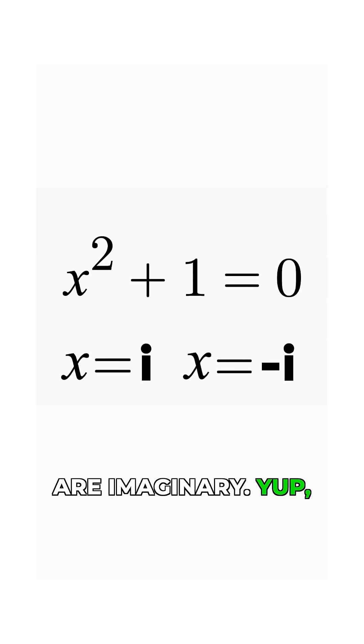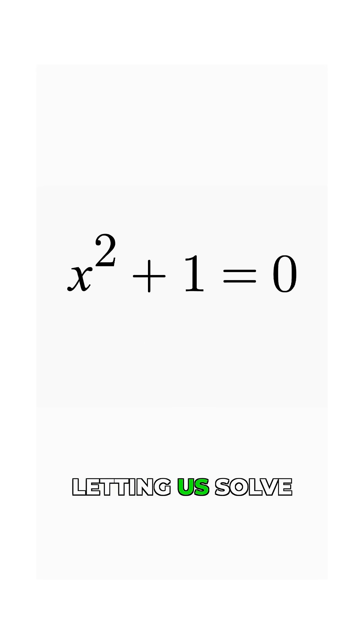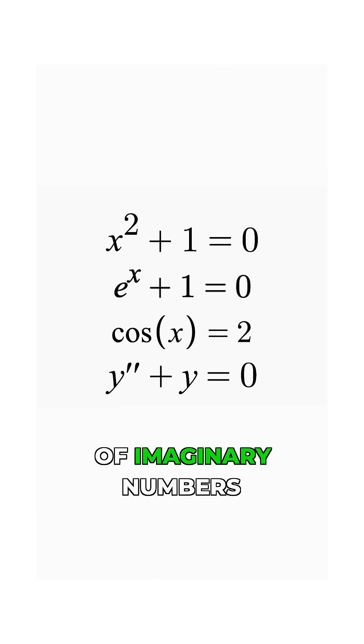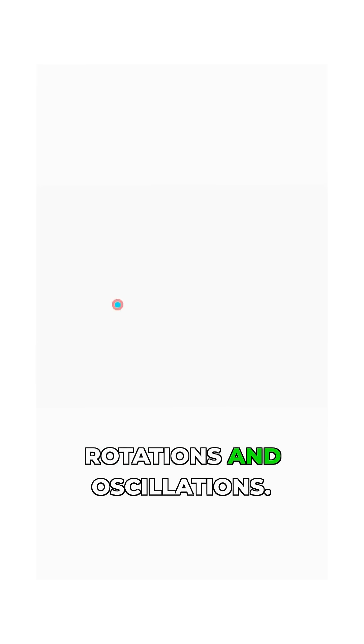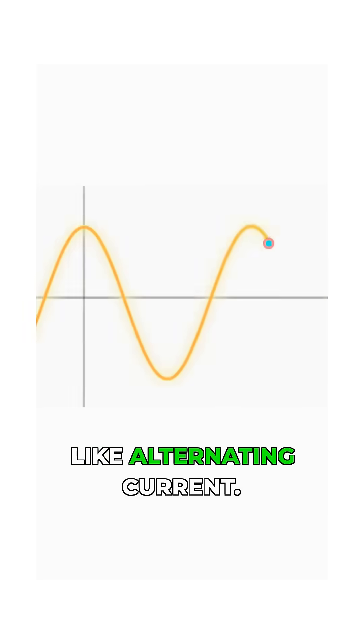But these are imaginary. Yep, not real. But if i isn't a real number, what's the point of it? Well, apart from letting us solve all sorts of equations, imaginary numbers help us represent rotations and oscillations. Like alternating current.